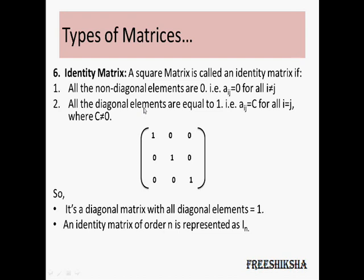Next is the identity matrix, which is one of the most important types of matrices. It's a matrix where the non-diagonal elements are all equal to 0 and the diagonal elements are all equal to 1. It's called the identity matrix because if you multiply any other matrix with this particular matrix, that matrix remains as it is.